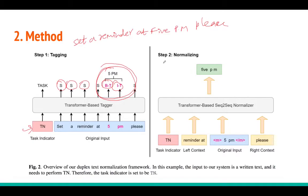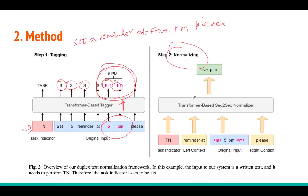Once you have the semiotic segment identified, you use it to normalize that portion of the sentence. Importantly, you take that segment along with left context and right context — not just the segment alone. Providing this context helps the model significantly, as we'll see in the results section.